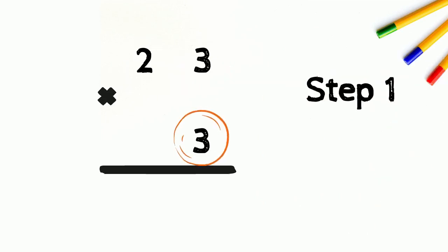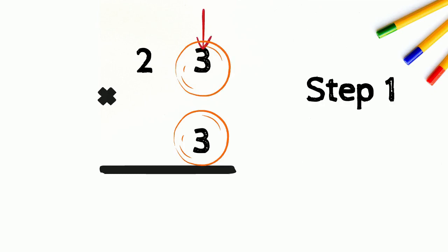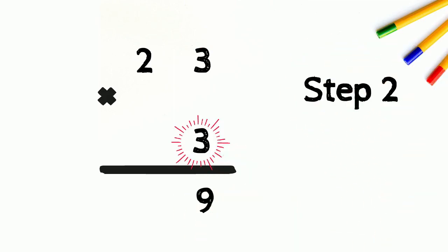For the first step, we multiply the bottom number by the ones place digit of the top number. We always start from the ones place and make our way left to the tens. So 3 times 3 equals 9. For the second step, we multiply the bottom number by the tens place digit of the top number. So 3 times 2 equals 6. Our answer is 69.